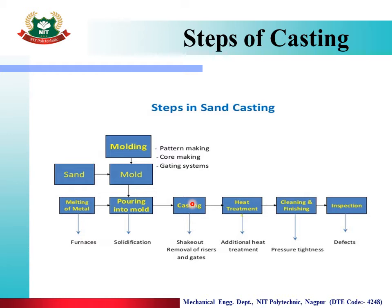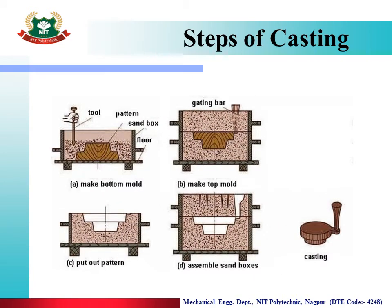Once the mold is ready, we can see how much material we have in our casting product. We remove the excess material from the runner and riser. We then apply additional heat treatment and perform cleaning or finishing. After inspection, the casting product is complete. This process can be done in different steps, and each step is very important to understand.